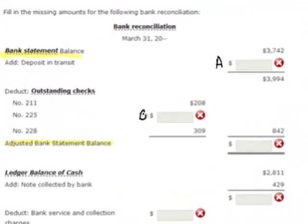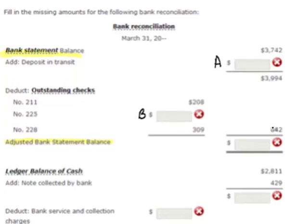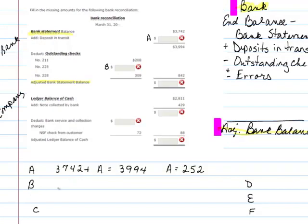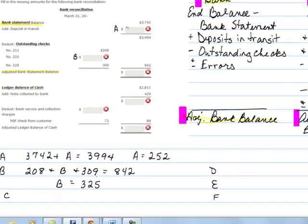For our second missing number, we see that we have three checks added together to give a total of $842. This $842 represents the outstanding checks, which is a reduction. We need to determine the total: $208 for check number 211, plus B, plus $309, gives us $842. So doing the algebra — subtracting $208 and $309 from both sides — B equals $325.